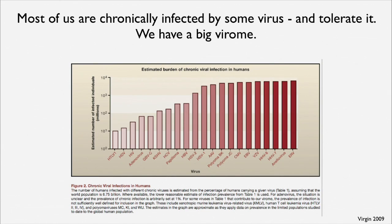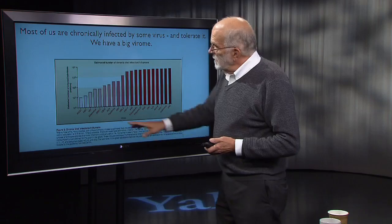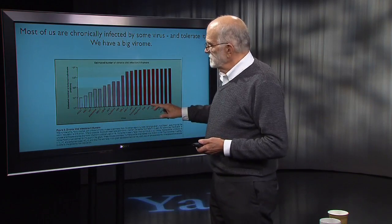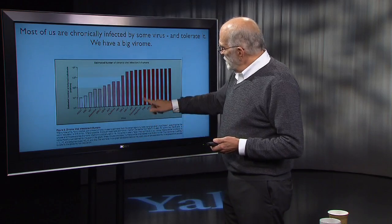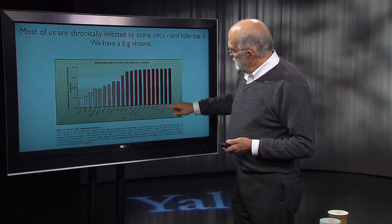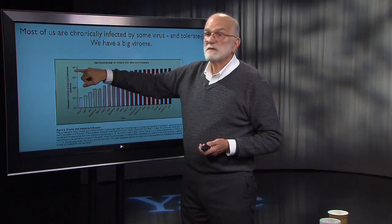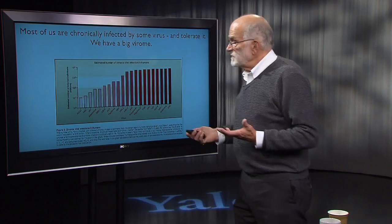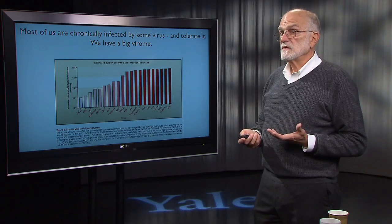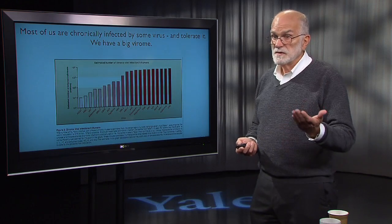That's just one example, but what about the big picture? Most of us are chronically infected by some virus and we tolerate it—we have a big virome. Each bar here represents a different kind of virus: HIV over here, a polyomavirus, hepatitis viruses of various types. This shows the estimated number of infected individuals on the planet for each kind of virus, in millions. If you add up the people infected by these viruses, that's everyone on the planet. All of us are carrying many viruses that have the capacity to produce disease, but we are tolerating it—we have figured out how to deal with it. HIV, of course, is an exception.